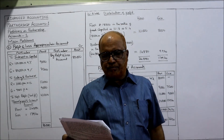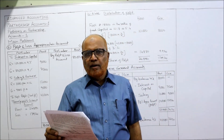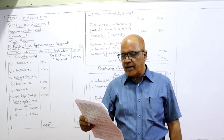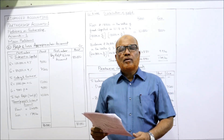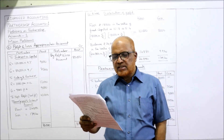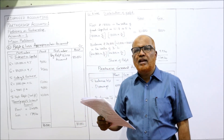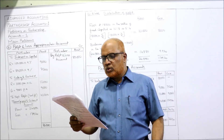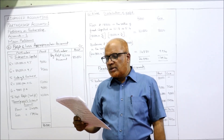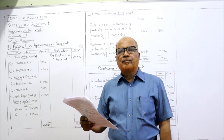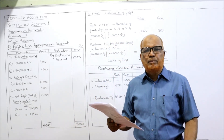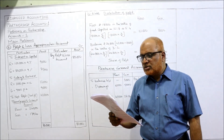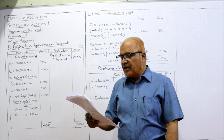See the second problem. Problem number two: Ravi and Giri are partners in a partnership firm. Their deed provides the following clauses. First, interest on capital at the rate of nine percent per annum. Second, salary of one thousand per month to Ravi and nine thousand per annum to Giri. So both partners are eligible to get salary out of the profits made.